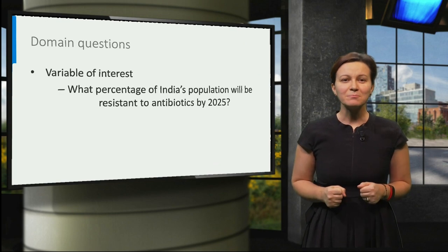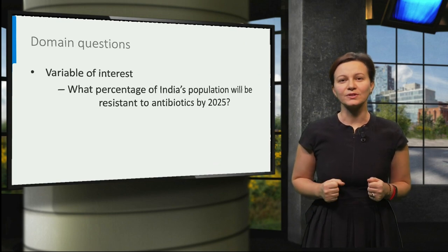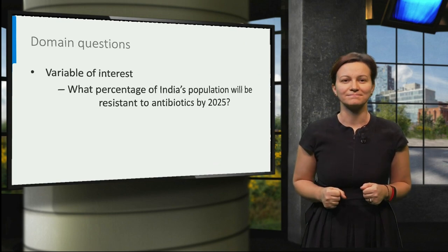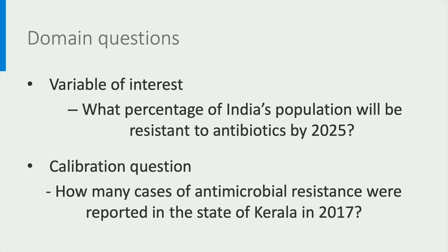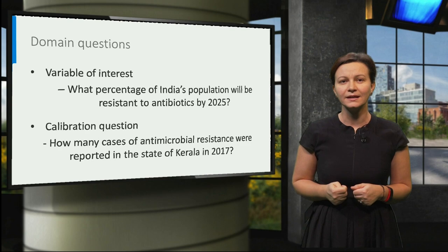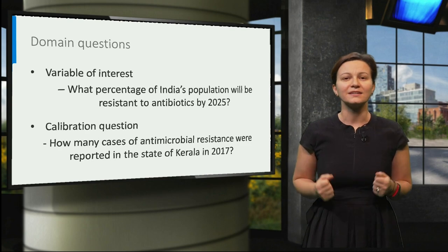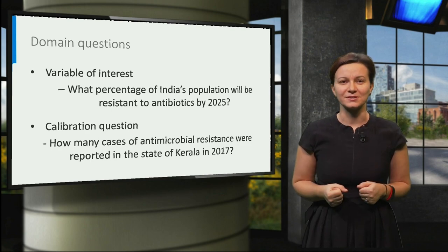To consider a simple example, suppose the question of interest is: what percentage of India's population will be resistant to antibiotics by 2025? Then the following question — how many cases of antimicrobial resistance were reported in the state of Kerala in 2017 — can be an example of a calibration question.